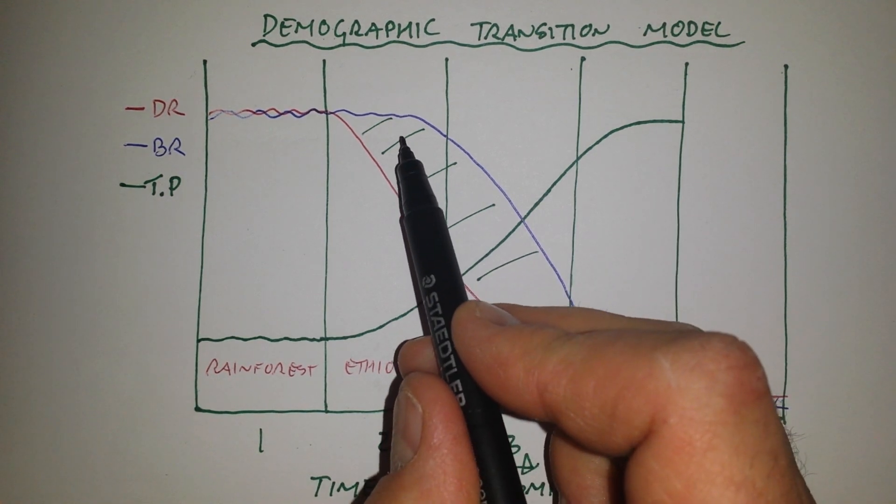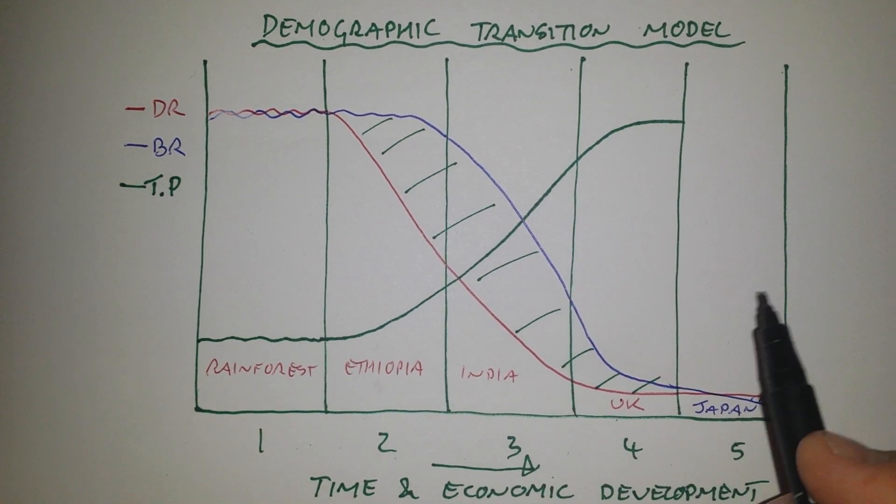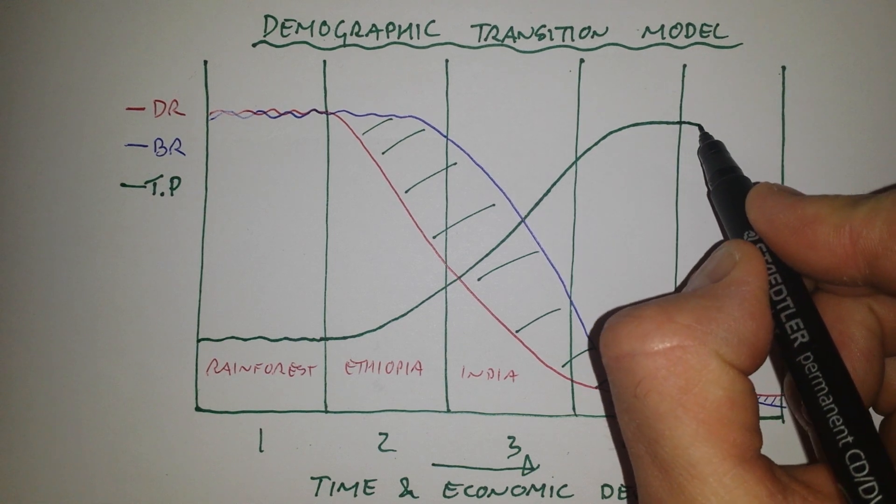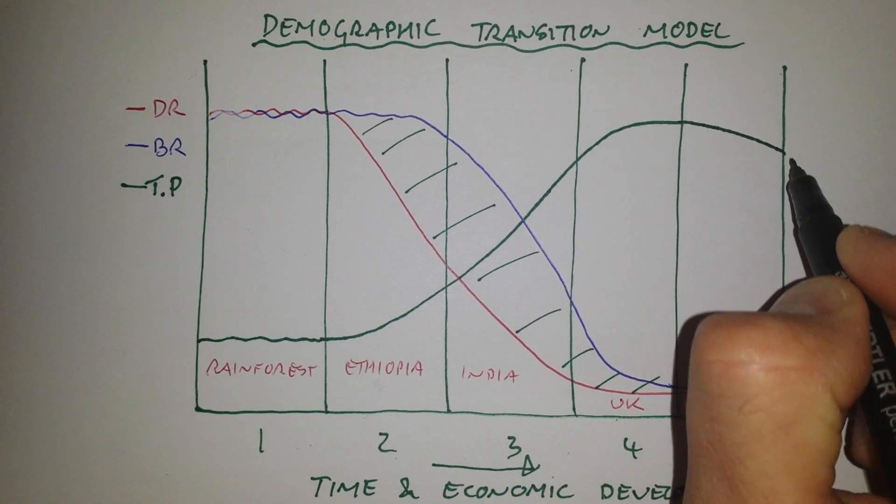And that causes what's called natural decrease. So over here, we have natural increase where births are above deaths. Down here, we have natural decrease. The population is starting to tail off and drop.